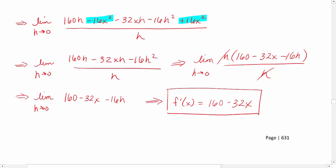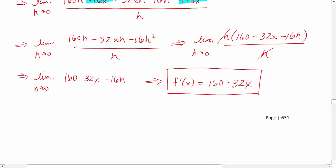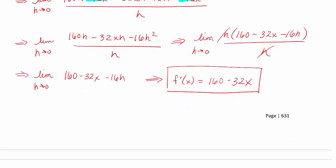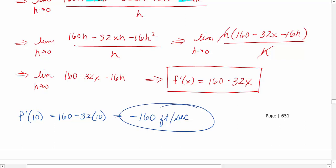That's not our final answer though. We need to actually evaluate our derivative at x = 10. So f'(10) equals 160 - 32(10), we get negative 160, and our unit once again is feet per second. This is our speed the instant our cannonball hits the ground.